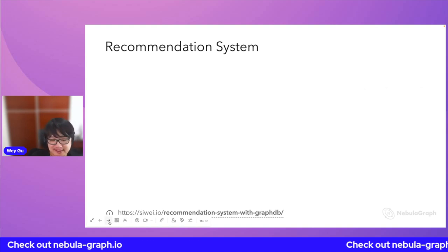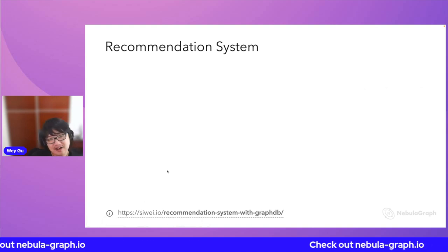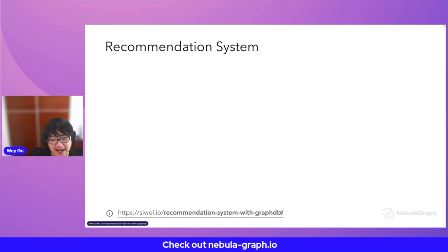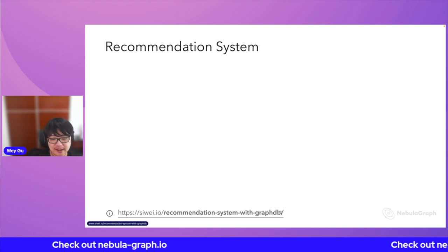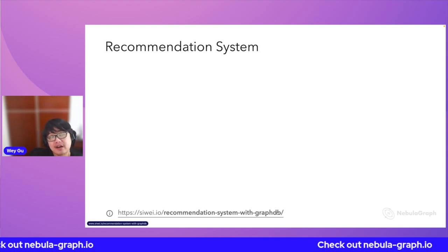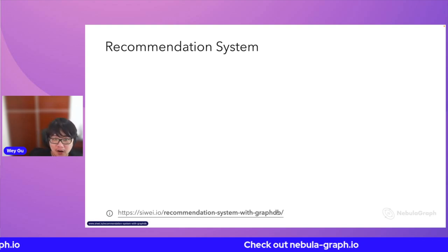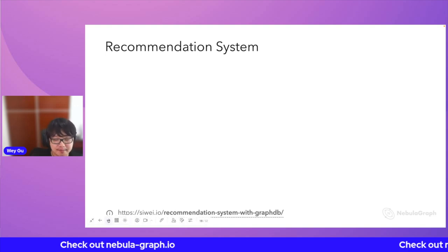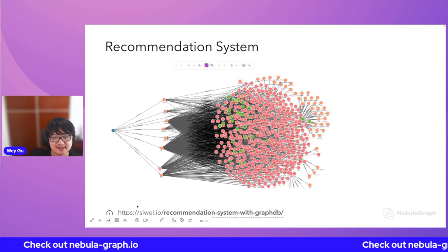Regarding recommendation systems, graph can help a lot here as well. I wrote a post at this URL and also provided all examples in a runnable playground, so you can set up your own and check all the methods — at least a lot of them.